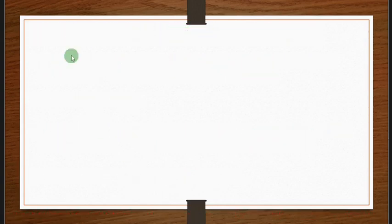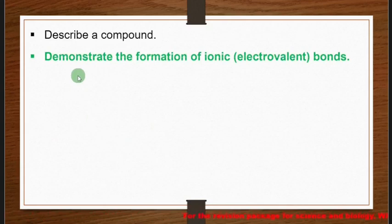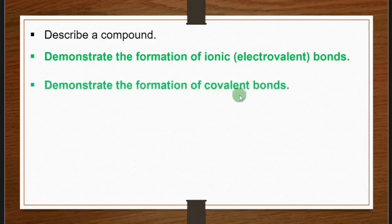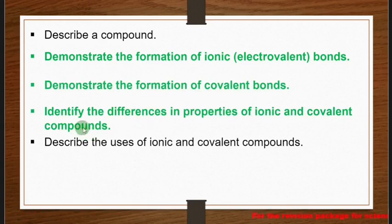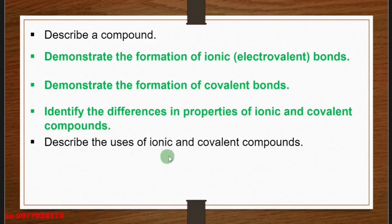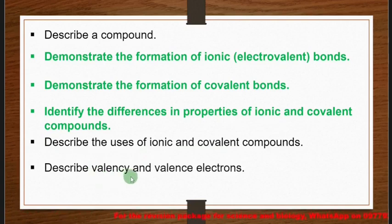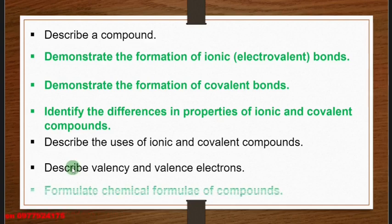You also need to describe a compound and demonstrate the formation of ionic or electrovalent bonds, demonstrate the formation of covalent bonds, identify the differences in properties of ionic and covalent compounds, and describe the uses of ionic and covalent compounds. Additionally, describe valency electrons and formulate chemical formulae of compounds.